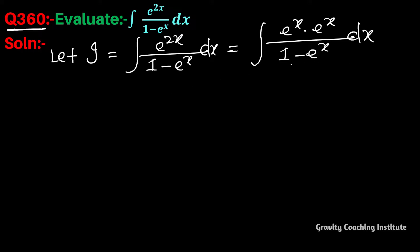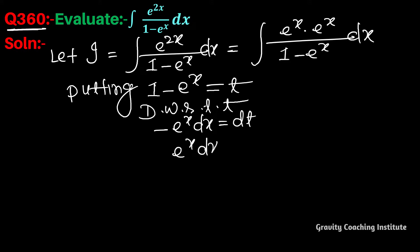If we differentiate the denominator, then e to the power x. So putting 1 minus e to the power x equal to t, now differentiate with respect to t. One constant is 0, minus e to the power x, so e to the power x dx equal to minus dt. Therefore I equal to integration...